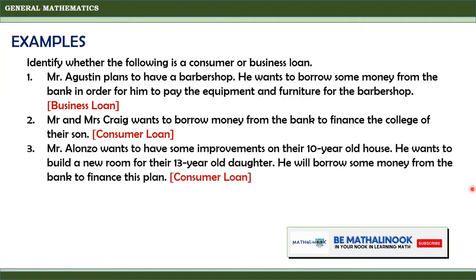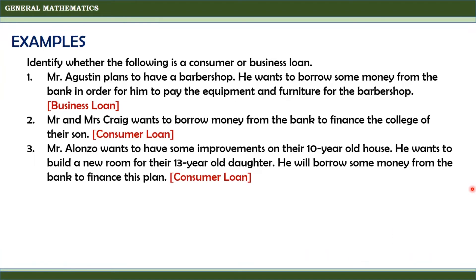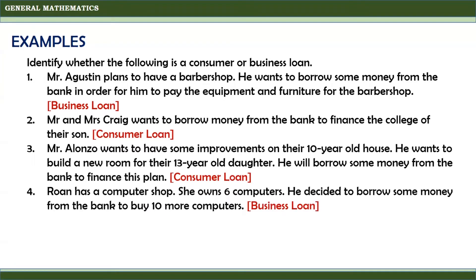For the third one, Mr. Alonzo wants to have some improvements on their 10-year-old house. He wants to build a new room for his 13-year-old daughter. He will borrow some money from the bank to finance this plan. Since the money will be used to improve their house, this is an example of a consumer loan.